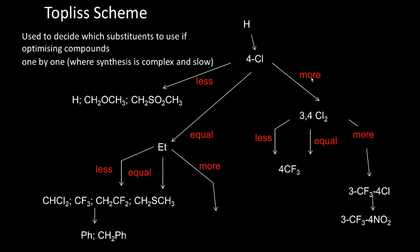That is called the Topliss scheme. We use it to decide which substituents to use when optimizing compounds, and we can do one-by-one synthesis. If the synthesis is very complex and slow, this is a very good approach. If the synthesis is very simple, you may just blindly substitute different functional groups using the Craig plot and then synthesize a large number of compounds with various electron donating/withdrawing, hydrophilic/lipophilic substitutions.